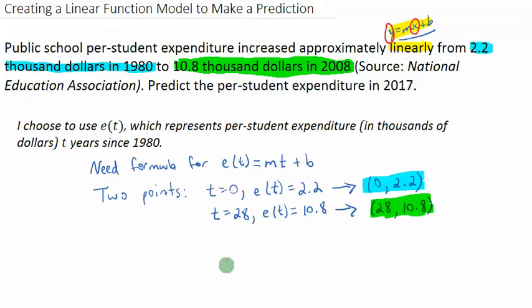Now I can calculate my slope. My slope is rise over run. I could plot these two points and visually see my rise over run. Or I can say that my rise is how much my y's change and my run is how much my x's change. So from 2.2 to 10.8, I rise 8.6. And from 0 to 28, I run 28. So my slope is rise 8.6 divided by run 28. And if I put that in decimal form, I get approximately .307.